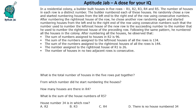Hello everyone, welcome to AptitudeJab. This problem says that there is a residential colony which has houses built in 5 rows, R1 to R5. The number of houses in each row is a distinct number and these houses are numbered. The person randomly chose a row and started numbering the houses from left-end to right-end in a random way using consecutive numbers.